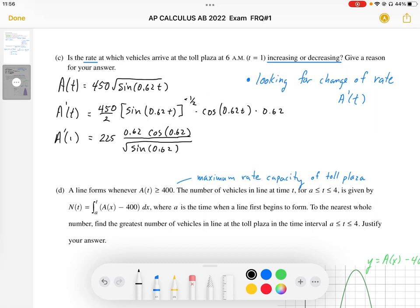When I plug in t equals 1, that's going to be my expression. So I need to then plug this into my graphing calculator. I'm going to end up with 225 times 0.62 cosine of 0.62, and that's going to be divided by the square root of sine of 0.62.